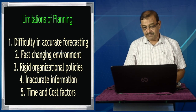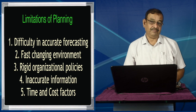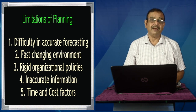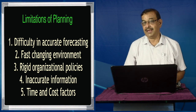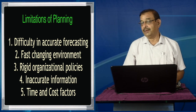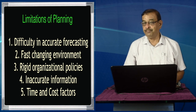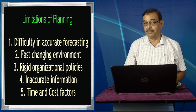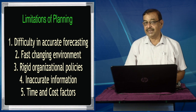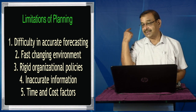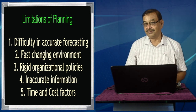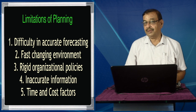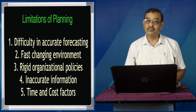After listening to my discussion and going through the unit, you should be in a position to understand what are the limitations of planning. The first limitation is difficulty in accurate forecasting. Forecasting is like trying to drive a car blindfolded, following the instructions of a person sitting next to you who is not looking at the front but at the backside mirror in which the front is getting reflected.